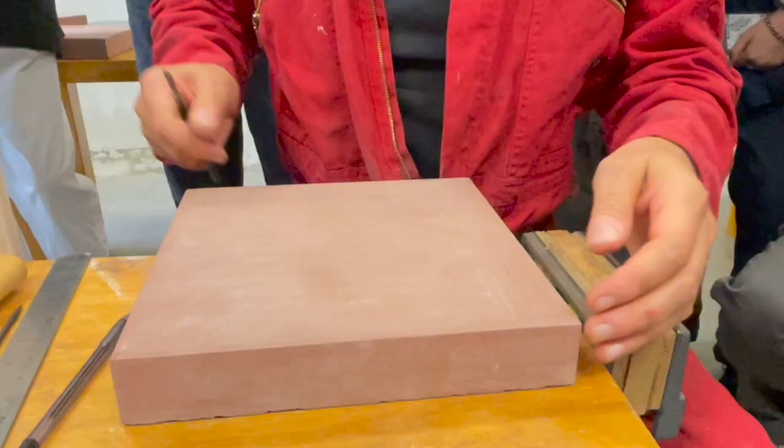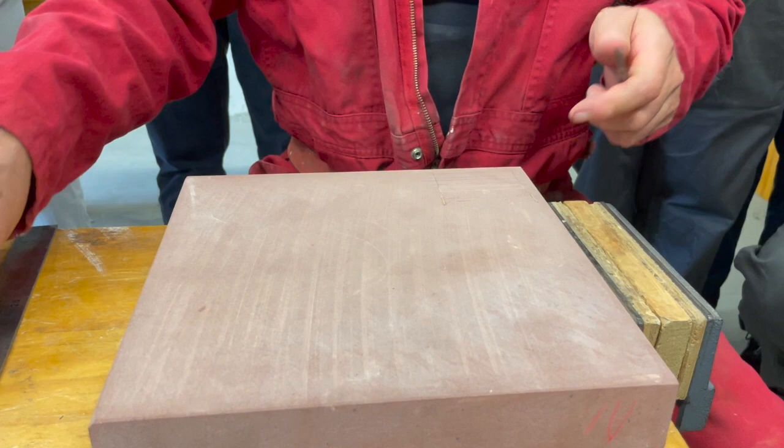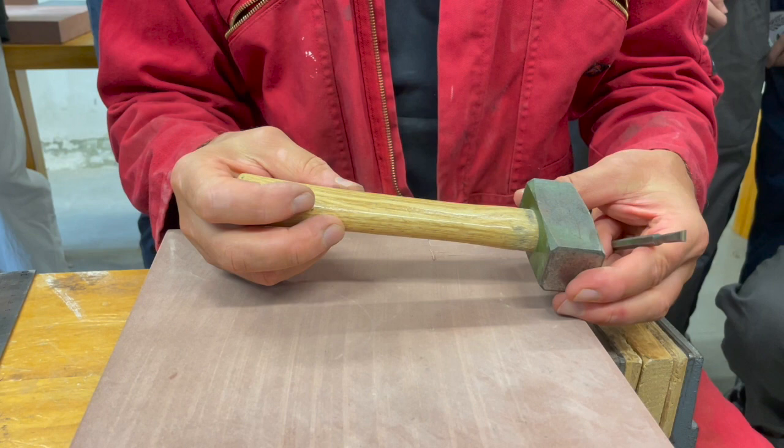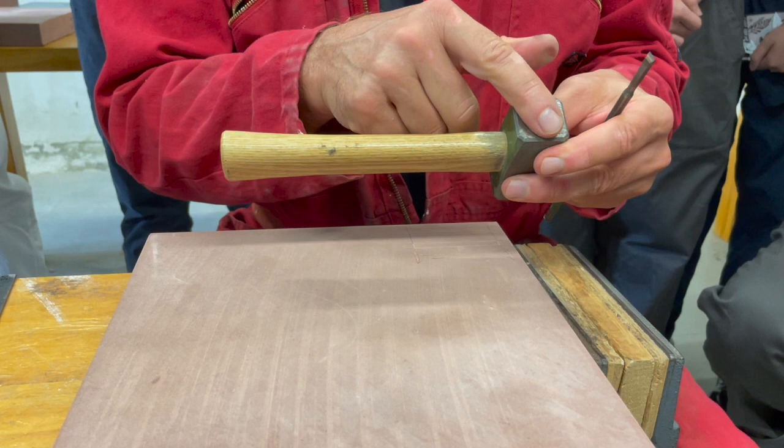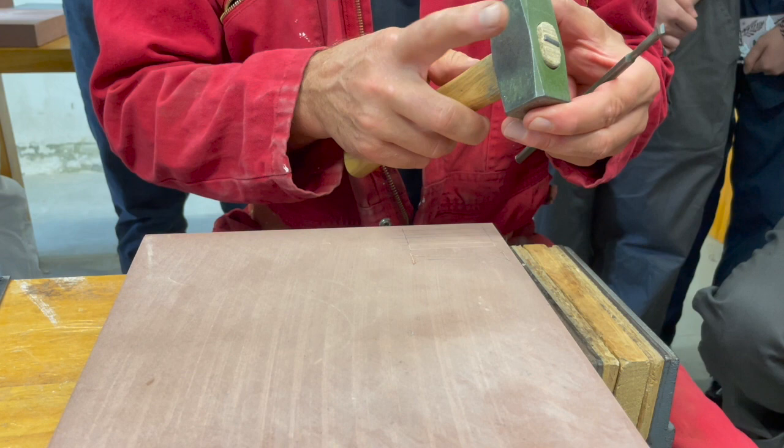So the first thing is you hit the chisels initially with the side not with the front. This makes a bit of a softer touch gives it a little bit of a swing. So you hold it like this and I hold my chisels like this.